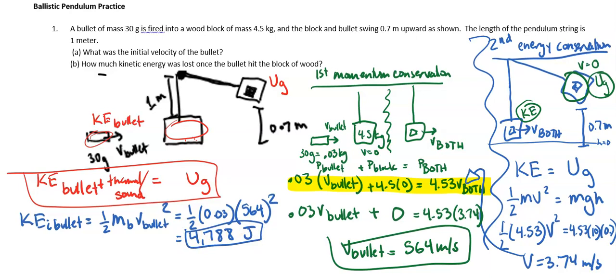Now, once it hits the block of the bullet, how much is lost? So now we need the KE of both. Let's go ahead and do that out. So 1/2 mass of both times the velocity of both squared. So that is going to be 1/2 mass of both is 4.53.